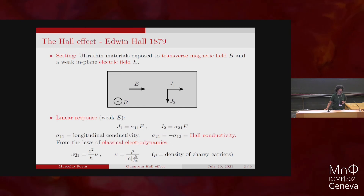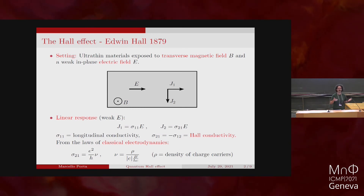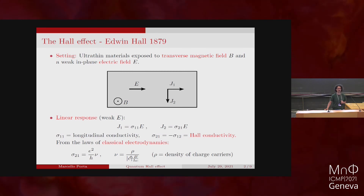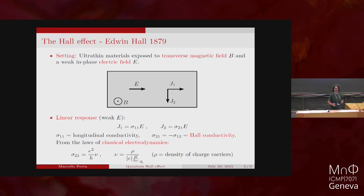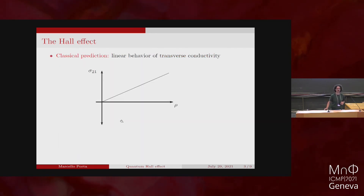You can study this from classical electrodynamics. If you take a model of non-interacting point-like particles with a charge and write down Maxwell's equations, you find that sigma_21 is proportional to the density of charge carriers rho — a bunch of constants including the square of the electron charge, Planck's constant, the magnetic field, and the speed of light. That's a very simple — and I would say a little boring — prediction that's the linear behavior you would expect from classical physics.